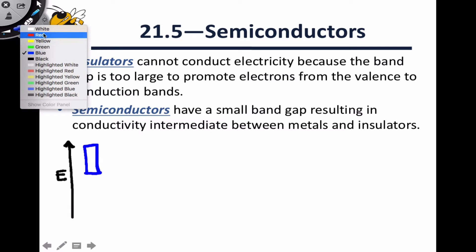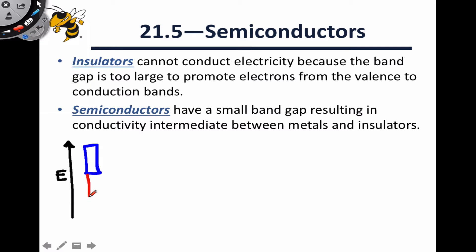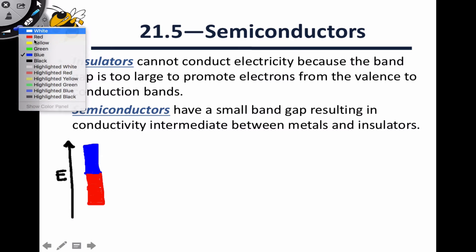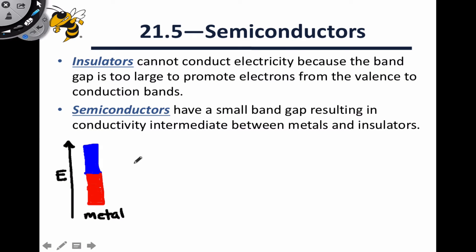In a metal, the valence and conduction band are essentially right next to each other — there's very little gap between these two bands. With the valence band filled and generally non-conducting electrons, the conduction band is empty except for a few electrons that have been thermally excited and participate in electrical conduction. In an insulator, there's a large separation between the valence and conduction bands: the conduction band is very high in energy and the valence band is very low.